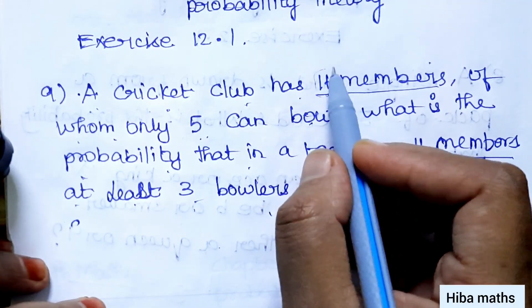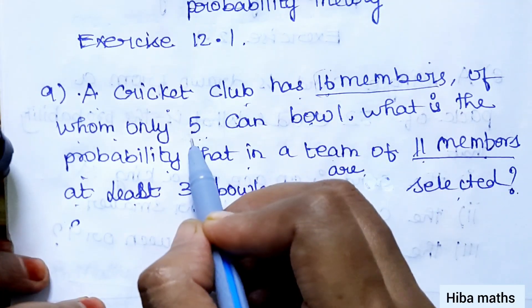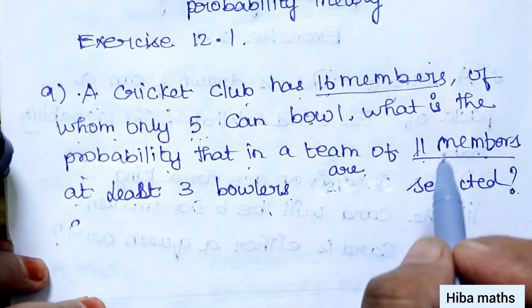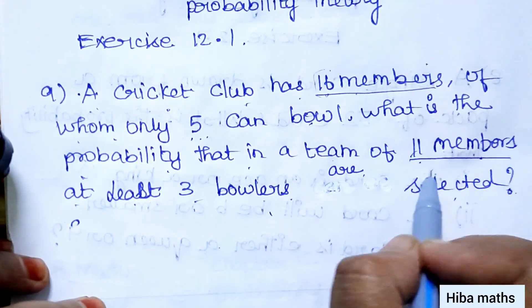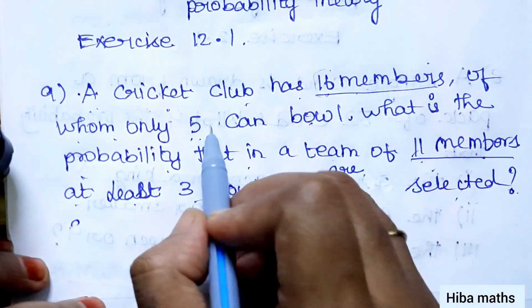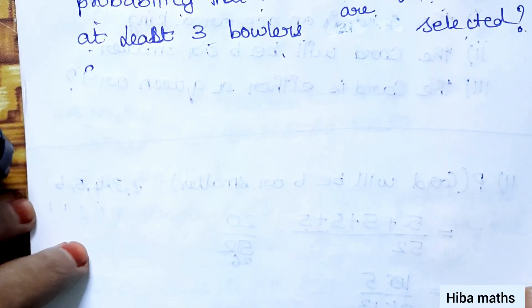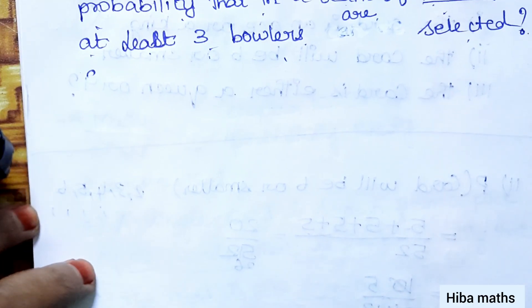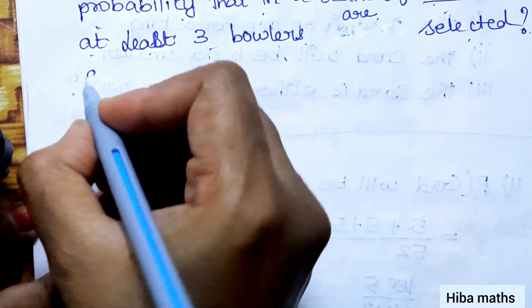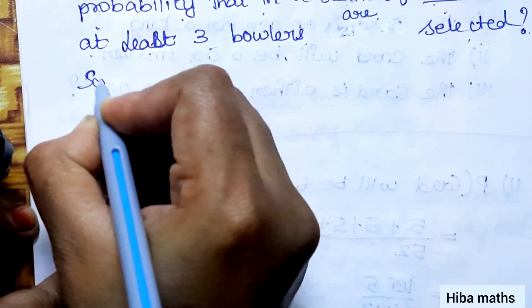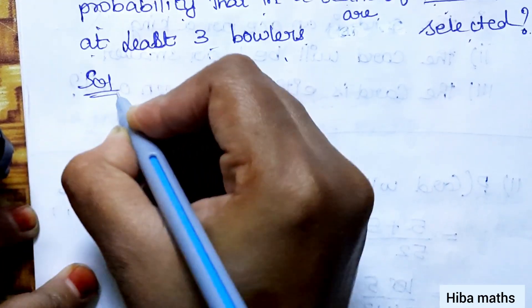In total we have 5 bowlers, and we need at least 3. That is the condition. Now for the solution.